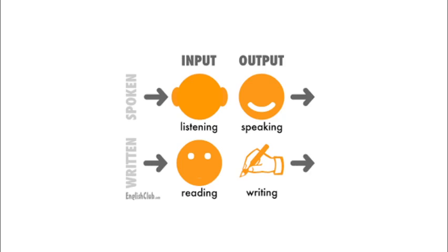If you take a look at the column, the input covers both listening and reading, and that is what we call the receptive skills. For the output, we have both speaking and writing, and that is what we call the productive skills. Overall, we have to pay attention to enhancing all four macro skills of language learning in order to be considered good communicators — that is the purpose of this course, Purposive Communication.